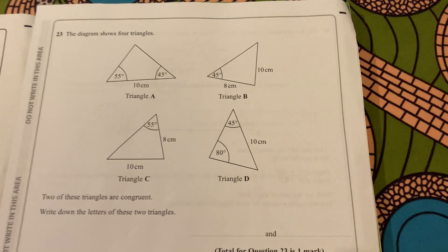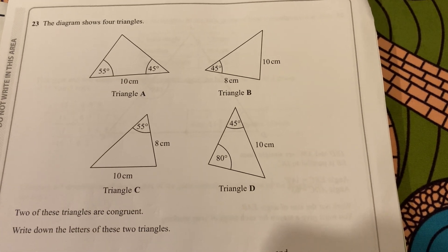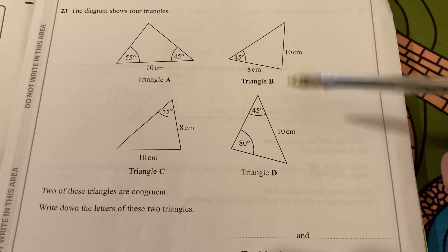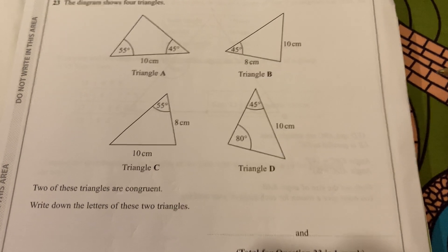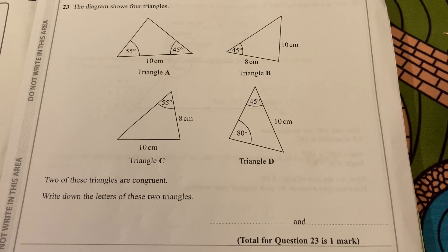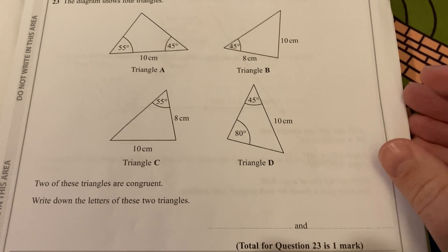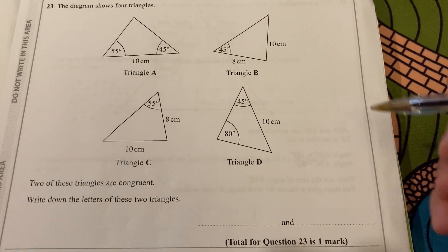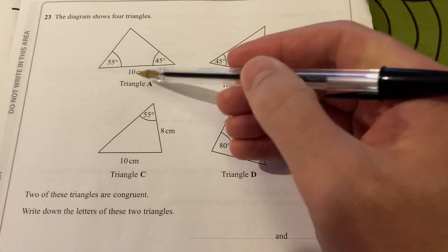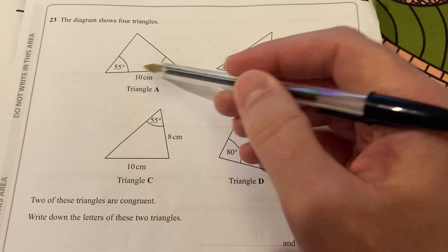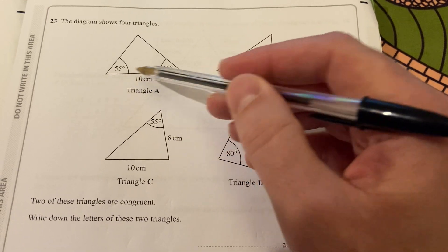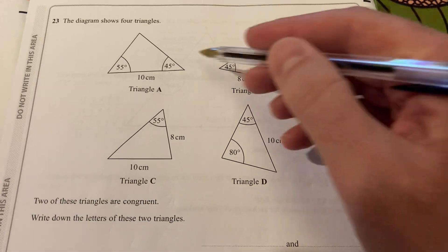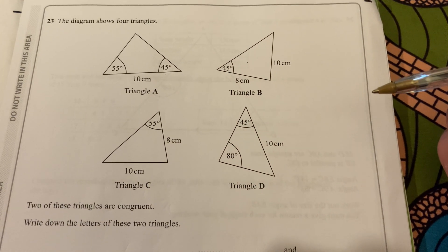Let's move on to question 23. The diagram shows four triangles. And two of these are congruent, meaning the sides and angles are the same. I'm going to write down the letter of those two triangles. It's only a one-mark question, but it does take a little bit of work. One thing to notice, triangle A, the 10 cm touches both those 55 and 45 degrees, and 10 does not touch that, so these two cannot be congruent.